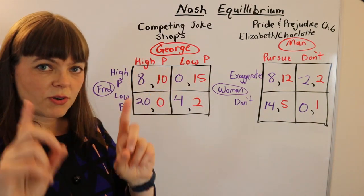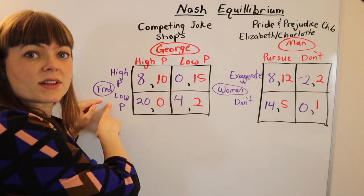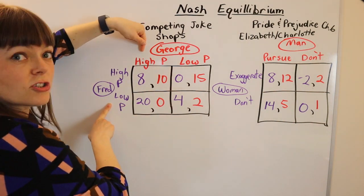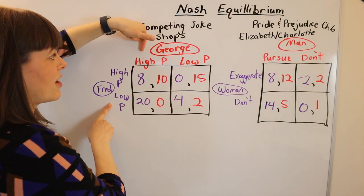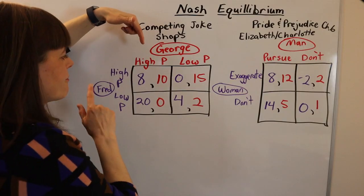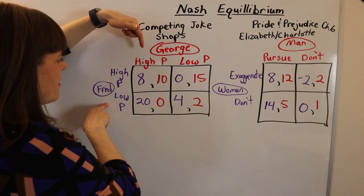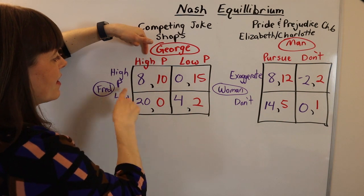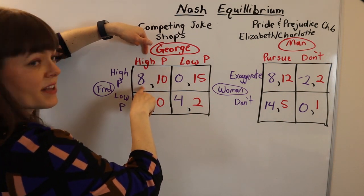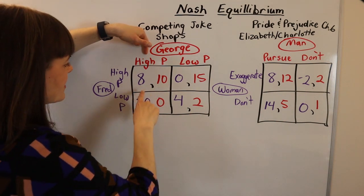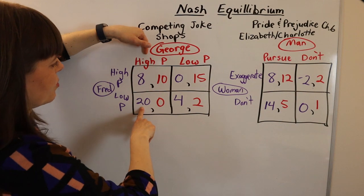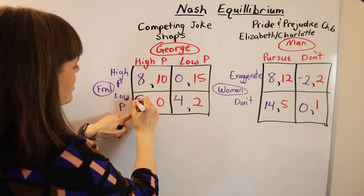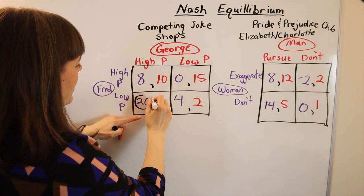From player one's perspective, you are going to check player two's strategies. Fred is going to think: if George sets his price high, would I wish I had set my price high and gotten the eight, or set my price low and gotten the 20? Fred prefers the 20 over the eight.